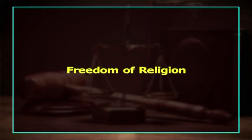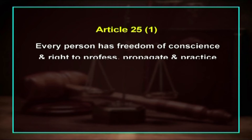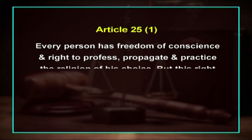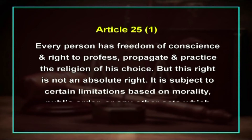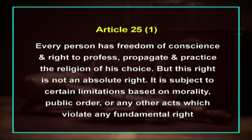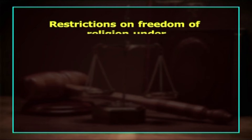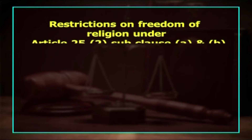Article 25 Clause 1 provides that every person has the freedom of conscience and the right to profess, propagate, and practice the religion of his choice. But this right is not an absolute right; it is subject to certain limitations based on morality, public order, or any other acts which violate any fundamental right. Article 25 Clause 2, Sub-Clause A and B, lays down restrictions on the freedom of religion.